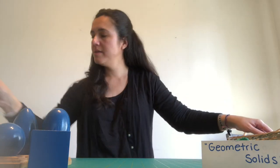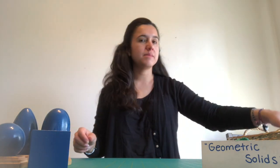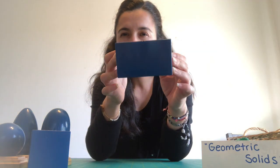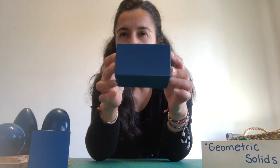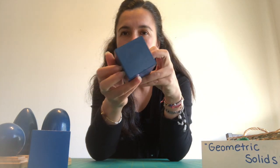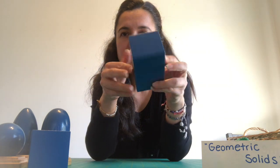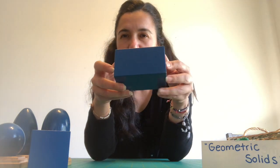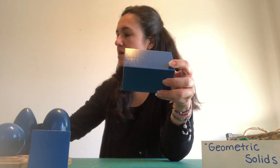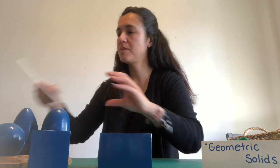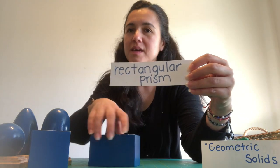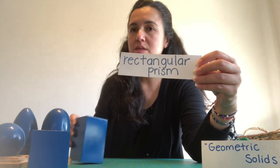The next one is this one. This one has squares on the other two sides. And you know how it's called? It's called rectangular prism. And I'm going to put the rectangular prism there.